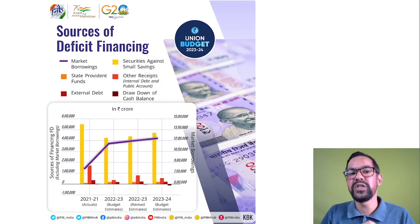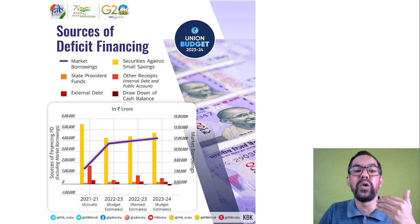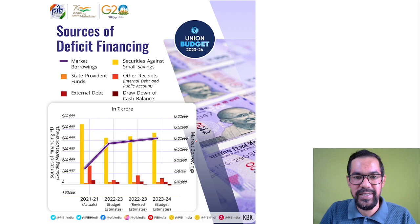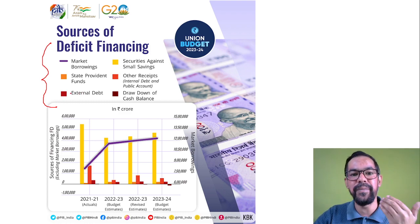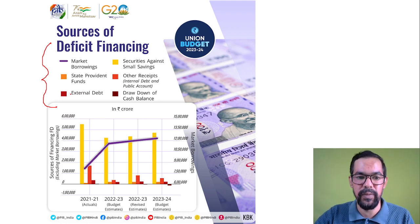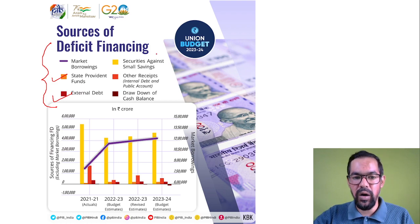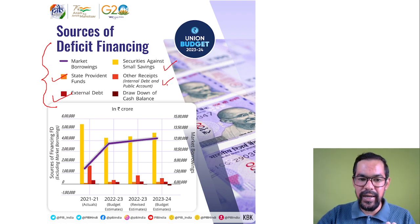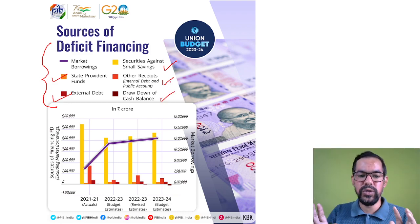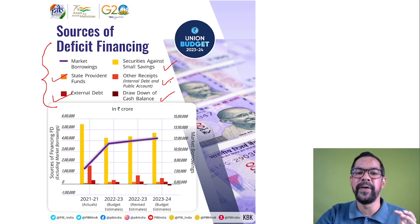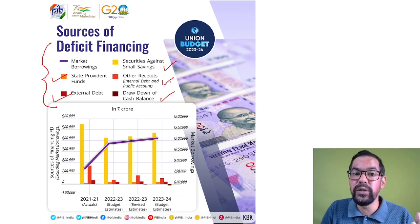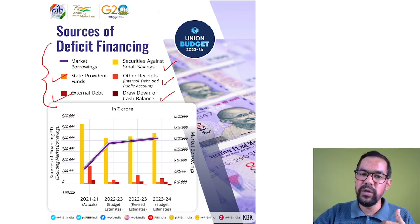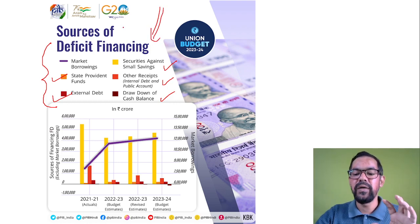Sources of financing the deficit include state provident funds, external debt, securities against small savings, internal debt, public accounts, and other cash balance borrowings. These are the major sources from which the government is planning to build the capital budget. Revenue receipts are generated through taxes and non-tax sources — that is the government's income — while capital receipts are money borrowed by the government.